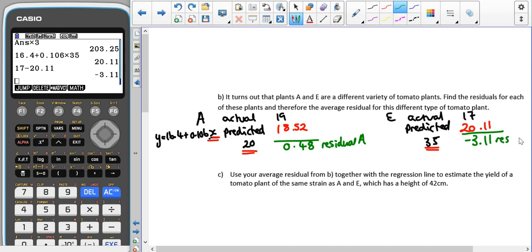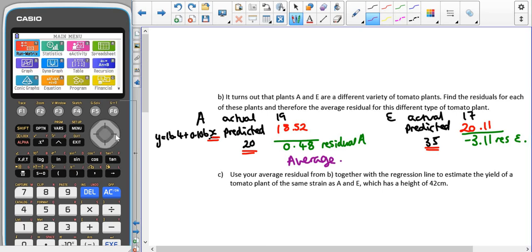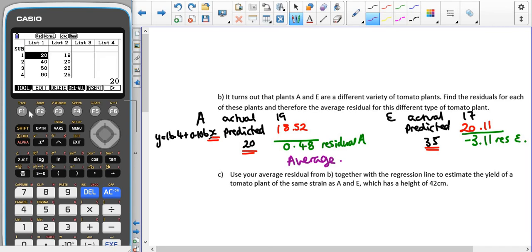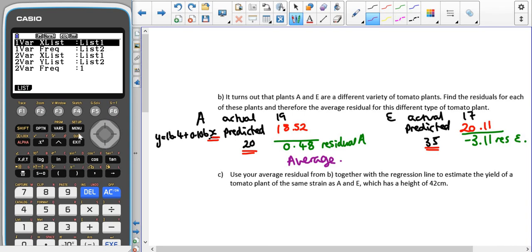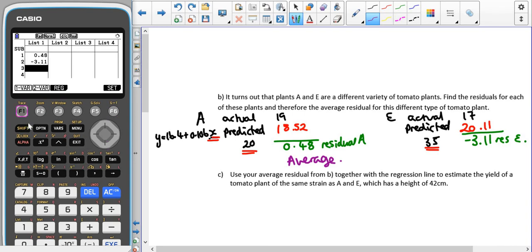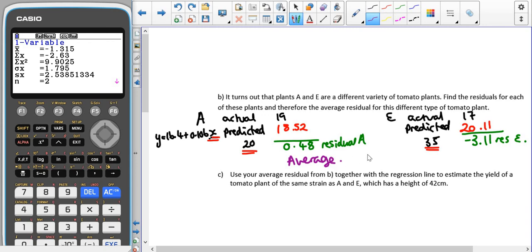For our average residual, if you wanted to be lazy, you could just put them into your stat mode, delete everything else, type those two numbers in, and then go to calc. Check that it says list one because we don't have any frequencies, then go to one var.